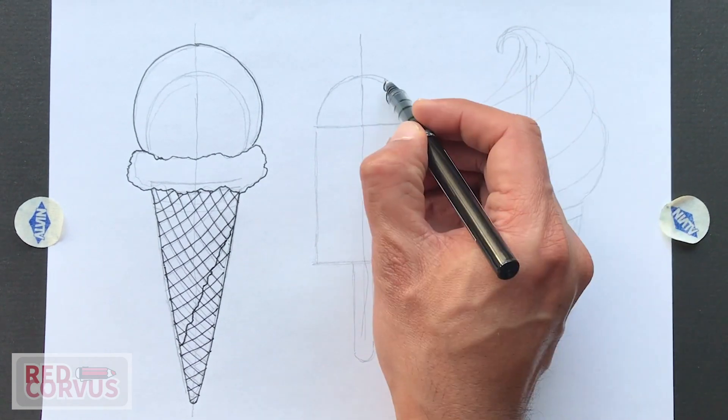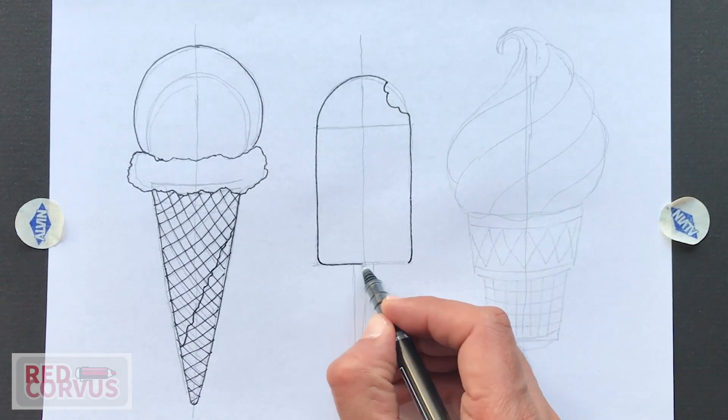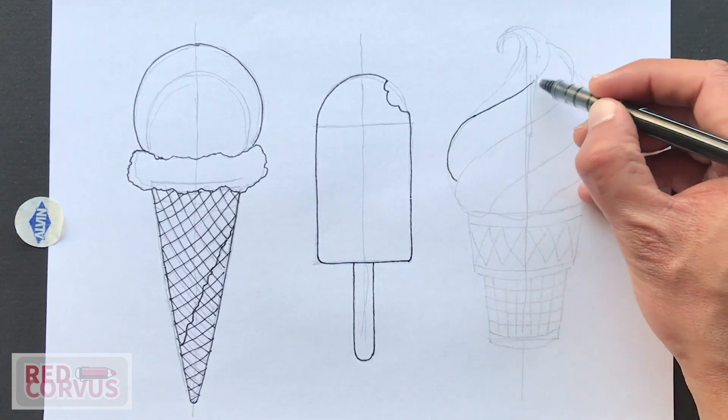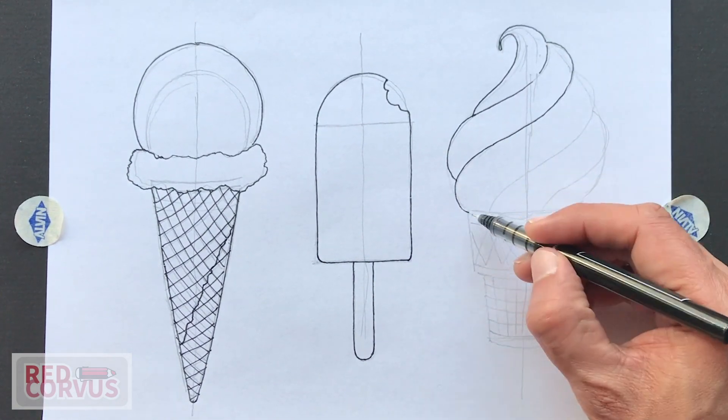For the popsicle, we'll draw a little bite taken out of it. And that's three semicircles. And for the soft serve, it's important to show the ice cream hanging over the edge a little bit. That will make it look more realistic.